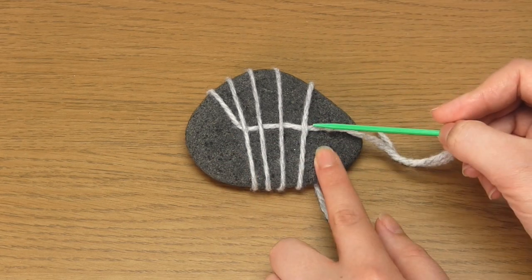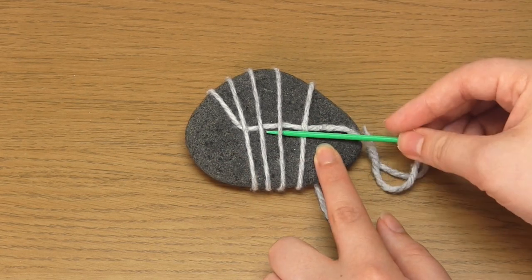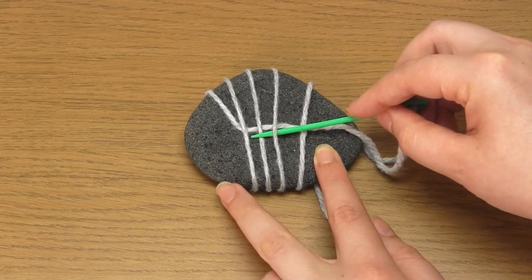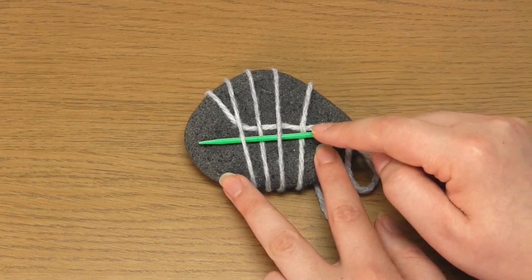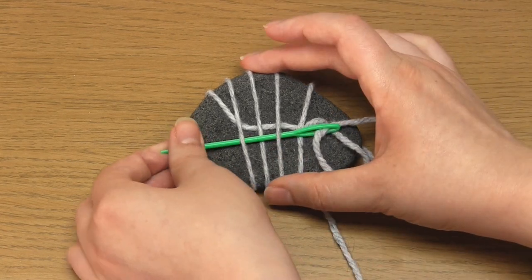Then feed the yarn tail into your yarn needle and weave it through the strands at the back of the pebble. To weave you simply need to go in and out of the strands all of the way across to the left.